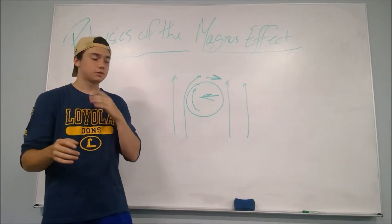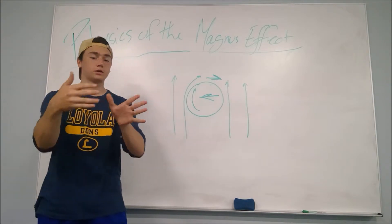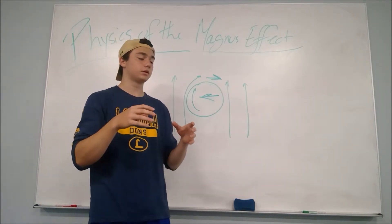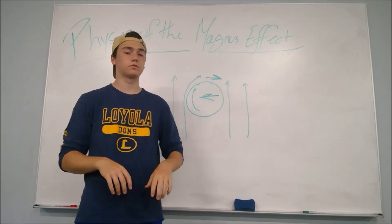In soccer, it's the same thing. You can generate side spin to let it curve the ball. You can bend it. And in golf, all the dimples in the ball help keep the air flowing so that the ball just keeps going further.